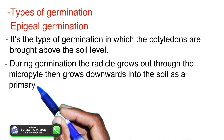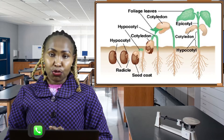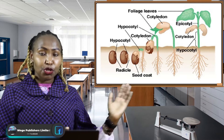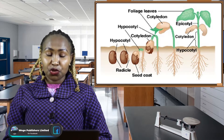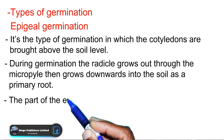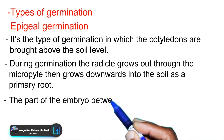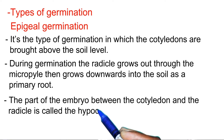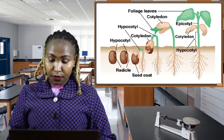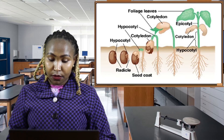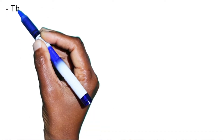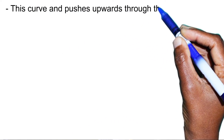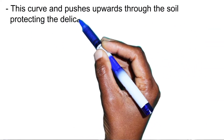This diagram shows epigeal germination. The radicle grows into the soil as a primary root. The part of the embryo between the cotyledon and the radicle is known as the hypocotyl. This curves upwards through the soil and protects the delicate shoot tip.